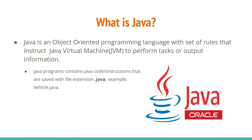Java programs contain Java code or instructions that are saved with the file extension .java. Any programming language contains a set of code or instructions that a developer writes, and that will be saved in a file. In the Java world, we save to a file with the extension .java — for example, vehicle.java — which contains Java code or a Java program.